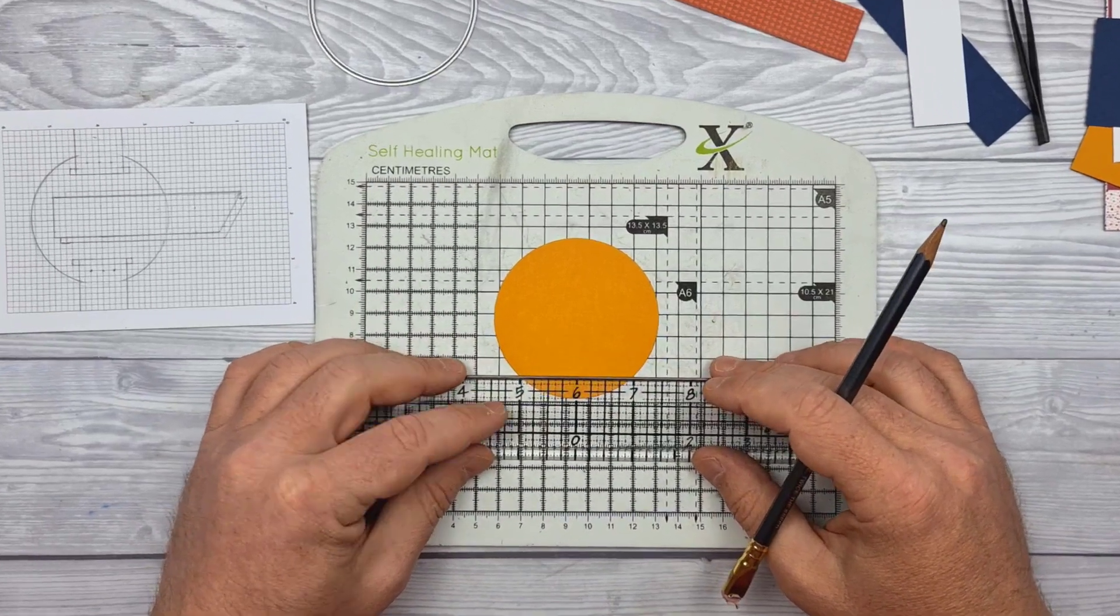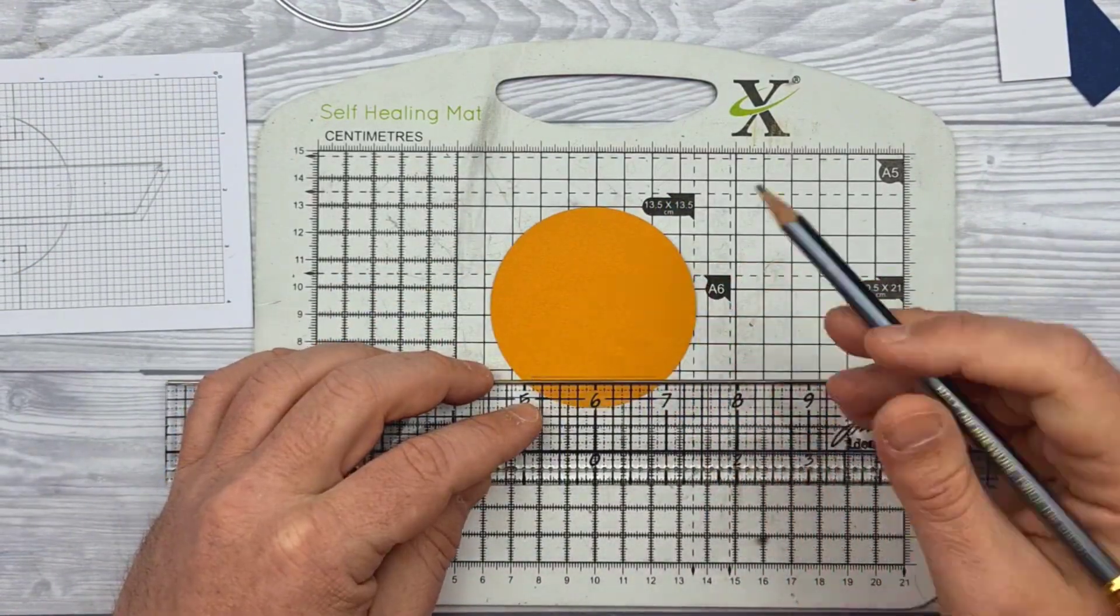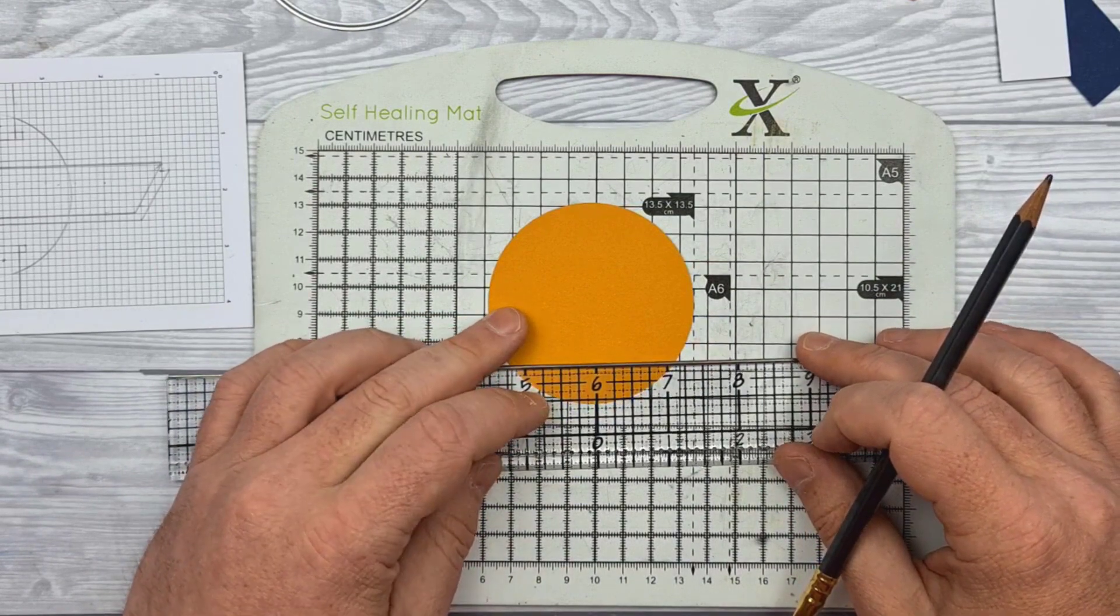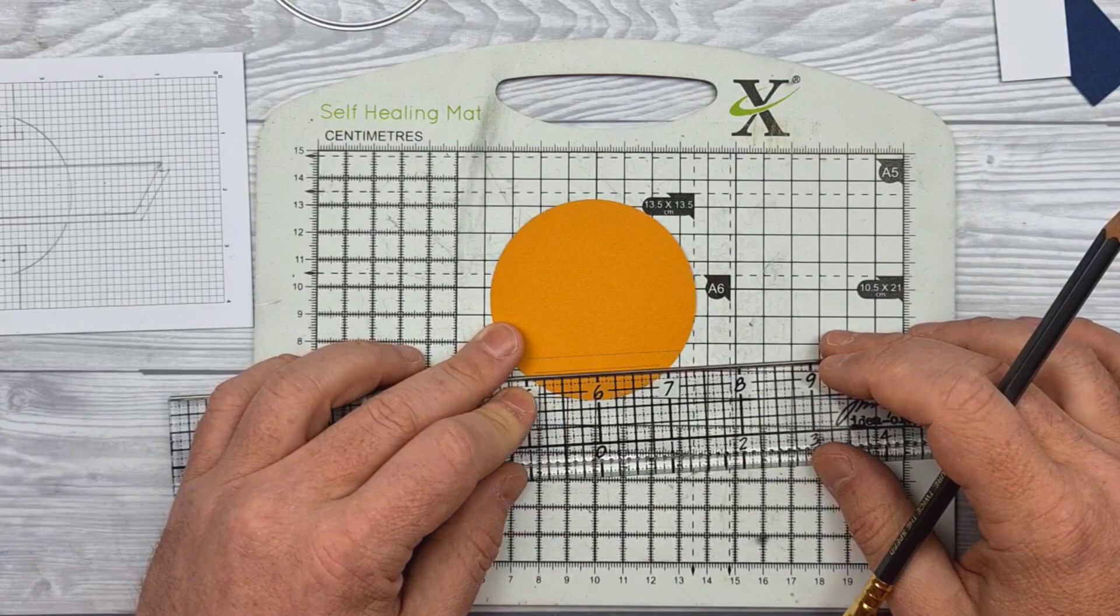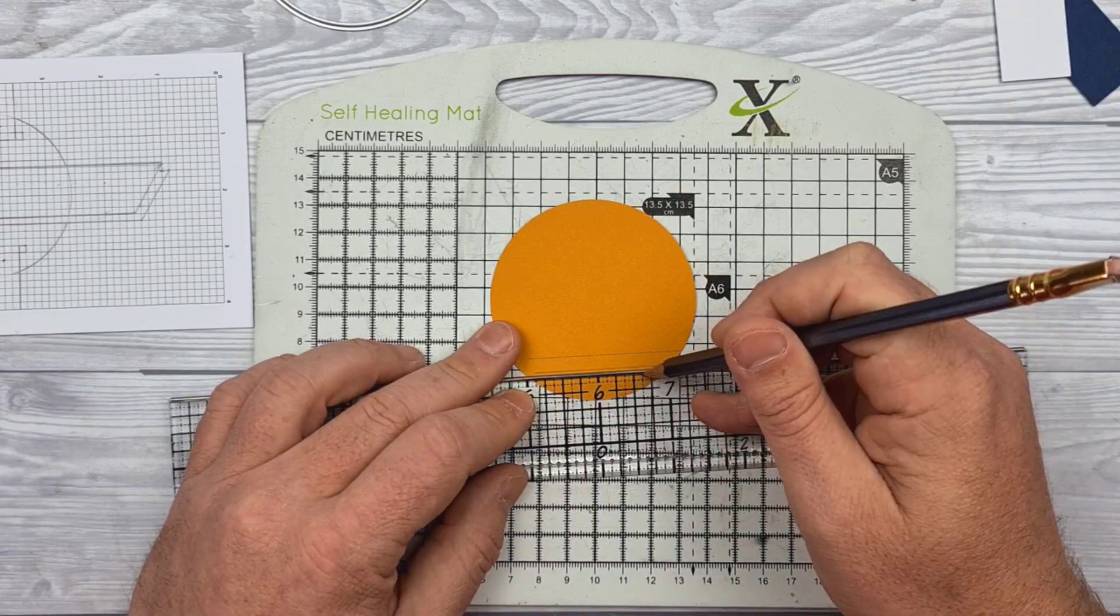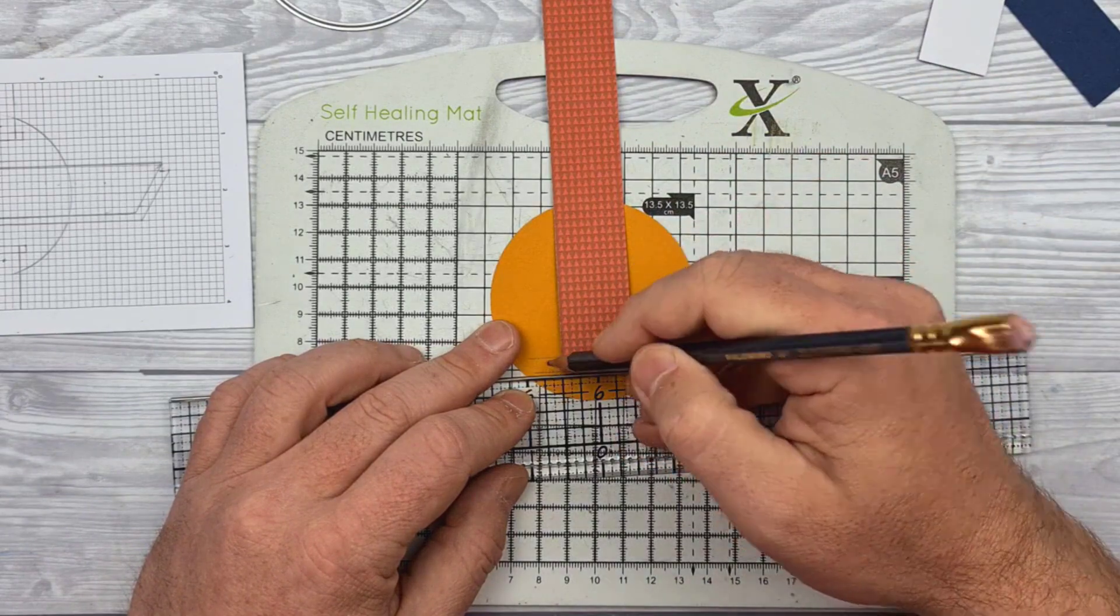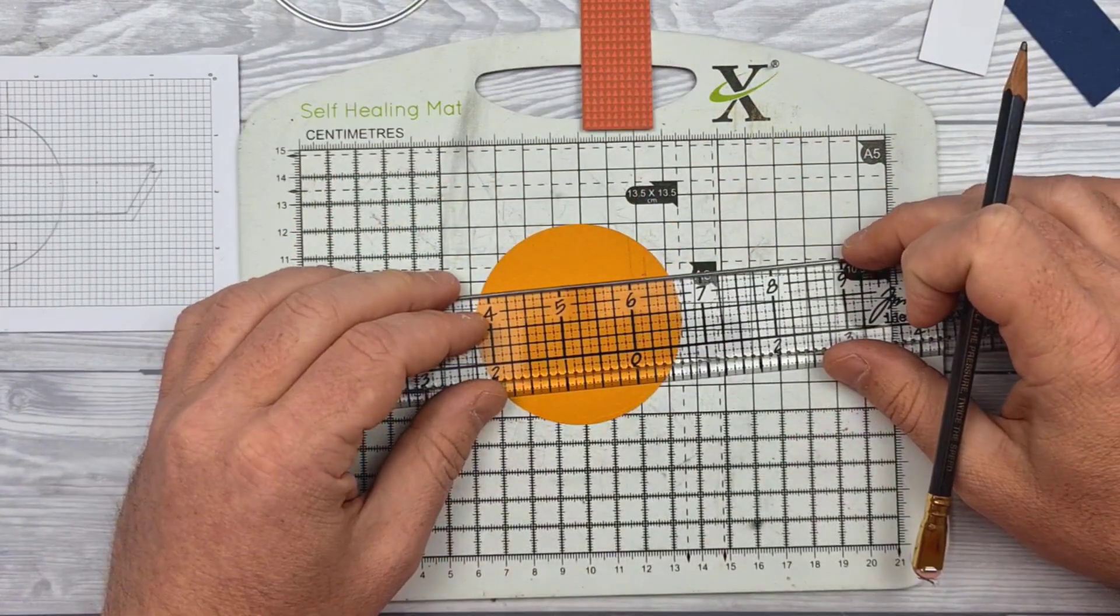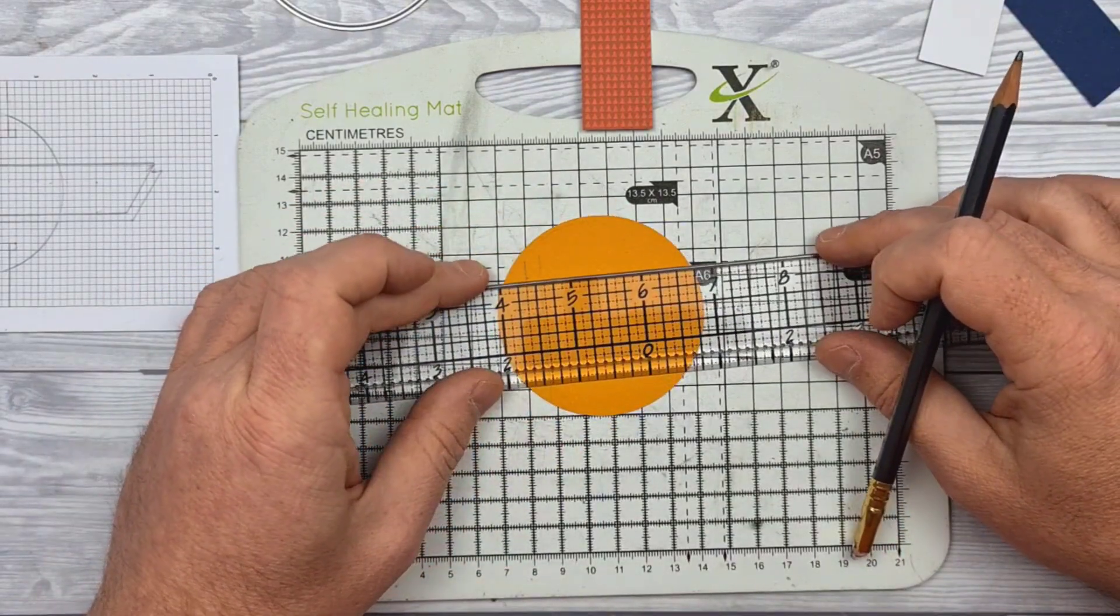I'm basically using my gridded ruler to measure and mark the places where I will cut to create the holes in what I'm calling the watch face. And where the strap, in inverted commas, quote unquote, will go through. I'm working on the back of the card, you can't really tell because it's solid coloured cardstock.